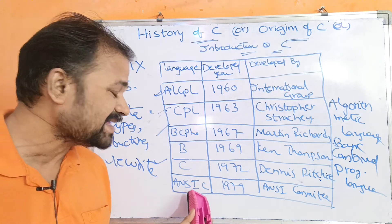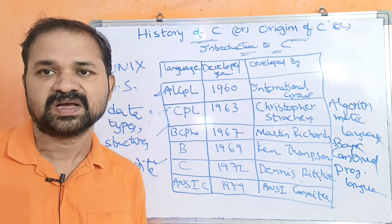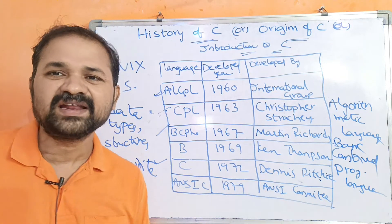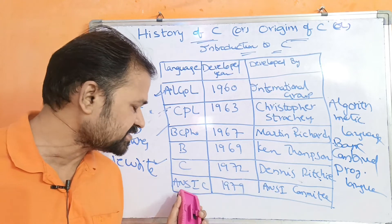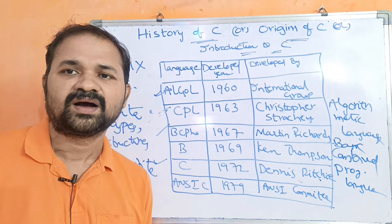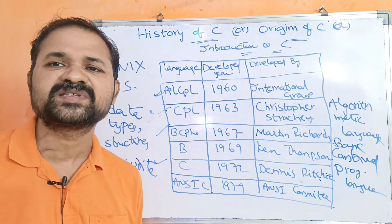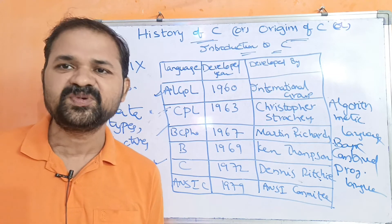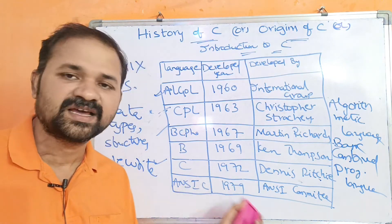In 1979, ANSI — the American National Standard Institute — released the final standard version of C. ANSI is a body concerned with software technology and standards. C, C++, HTML, PHP, and other web technologies are all governed by good standards through ANSI.